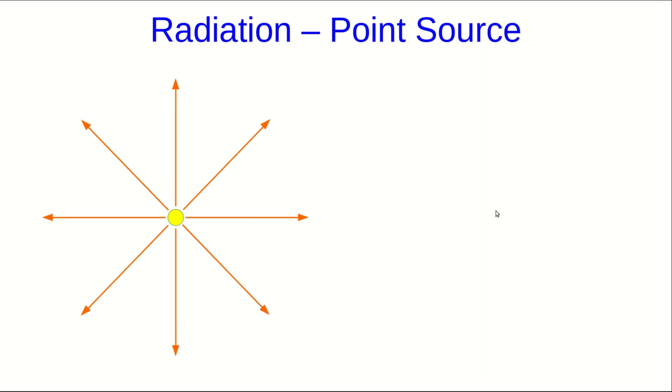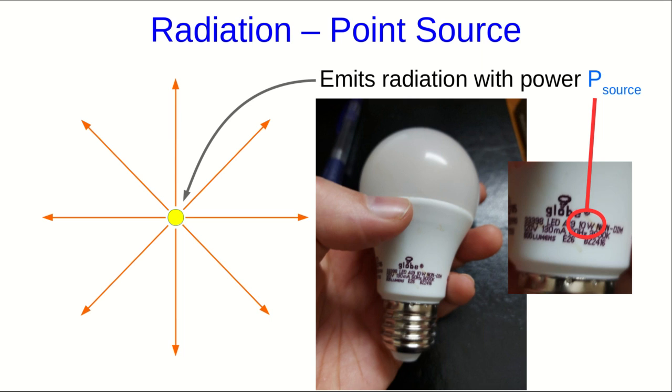In general, this is quite complicated, but there are some simple cases we can look at, and the simplest is a point source. So, imagine we have a very small source, and it is radiating electromagnetic radiation in all directions, equally in all directions, with some power that we'll just call P_source. This is just like the power that would be printed on a light bulb, except a light bulb really can't be approximated as a point source. It doesn't radiate in all directions because the base blocks radiation in some directions.